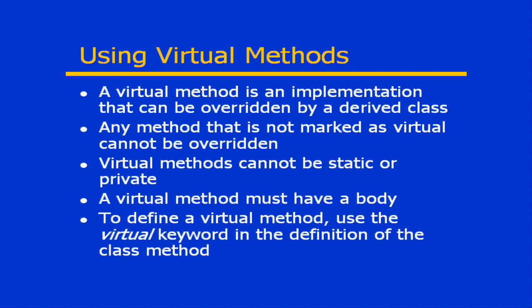Any method that is not marked as a virtual method cannot be overridden. So that means that by default, any of the methods that are in your base class are essentially final — they're fixed. You can't make any overriding implementations of those within your derived class. You must mark them as virtual in order to allow them to be overridden.